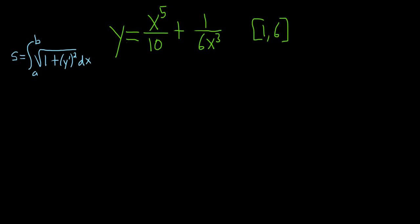The goal is to take the derivative, add 1 to it, and write it in a convenient way so that we can actually integrate. Before we take the derivative, let's rewrite our function. So y is equal to 1/10 x to the fifth, and then we can write the second piece as 1/6, bringing the exponent upstairs to make it negative. This makes it easier to take the derivative.